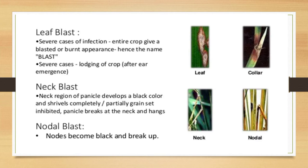Rice blast is categorized into three parts: leaf blast, neck blast, and nodal blast. In leaf blast, severe infection gives the entire crop a blasted or burnt appearance — hence the name. In neck blast, the neck region of the panicle develops a black color, grain set is completely or partially inhibited, and the panicle breaks at the neck and hangs. In nodal blast, nodes become black and break up.